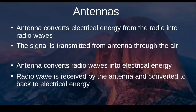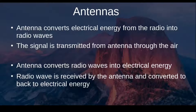The purpose of antennas is twofold. An antenna essentially converts electrical energy from the radio into radio waves. The radio produces a signal, that signal is sent to the antenna, and the antenna converts it from electrical energy to radio frequency energy — a radio wave — and transmits it throughout the airwaves.